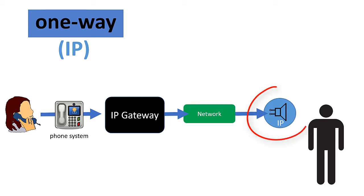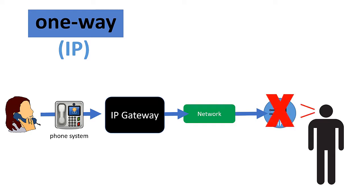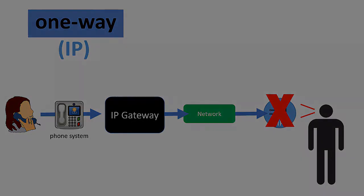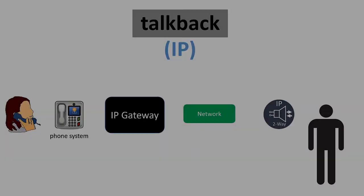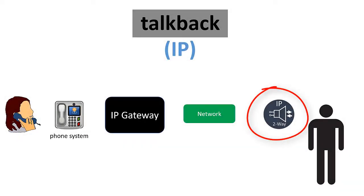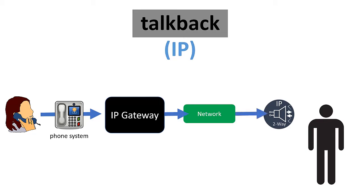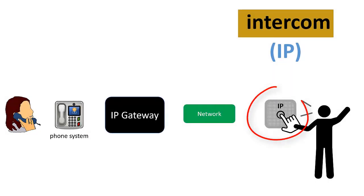For one-way paging, a standard one-way IP speaker is used. Just like in an analog system, those hearing the page at the speaker have no way to respond through the paging system. An IP talkback speaker is necessary if you would like the people hearing the page to be able to talk back through your IP paging system. And an IP push button or push button speaker is required if you would like intercom mode, where either party can originate a conversation.